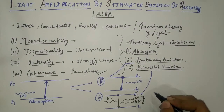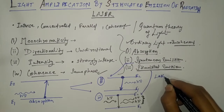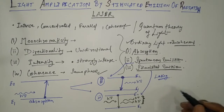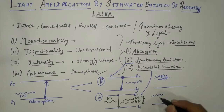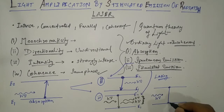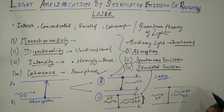This is the working principle of laser or the principle by which lasing action occurs. If the atom is in the higher energy state and we forcefully, by stimulated emission, bring it to the lower energy state from the metastable state, it gives away a similar photon of similar frequency. Hence we get two photons. This is how we obtain laser light.